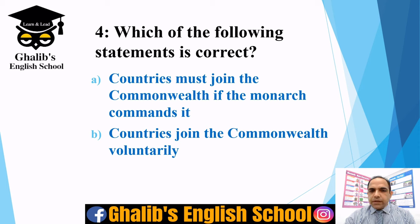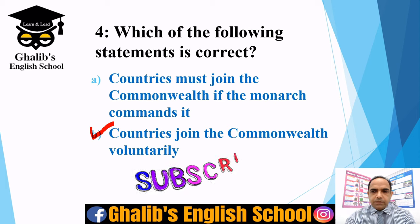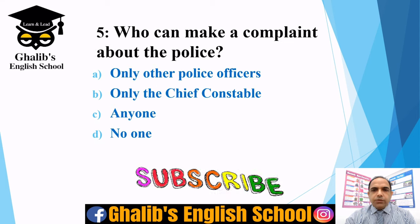Question number four: which of the following statements is correct — countries must join the Commonwealth if the monarch commands it, or countries join the Commonwealth voluntarily? This is a voluntary decision on behalf of the countries; they can decide it. So option B is correct.